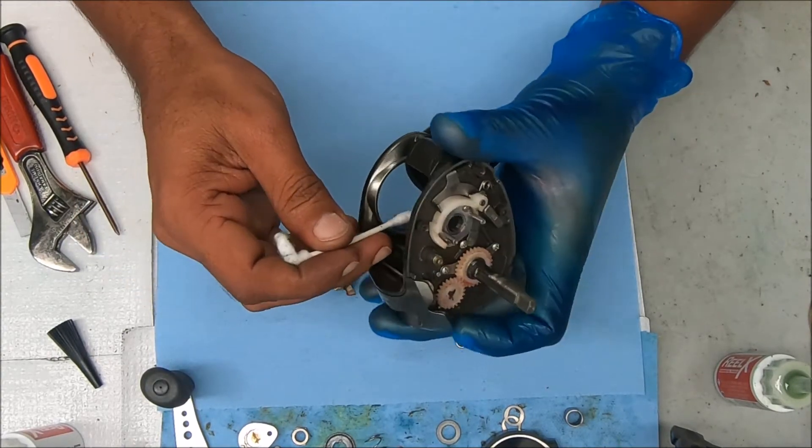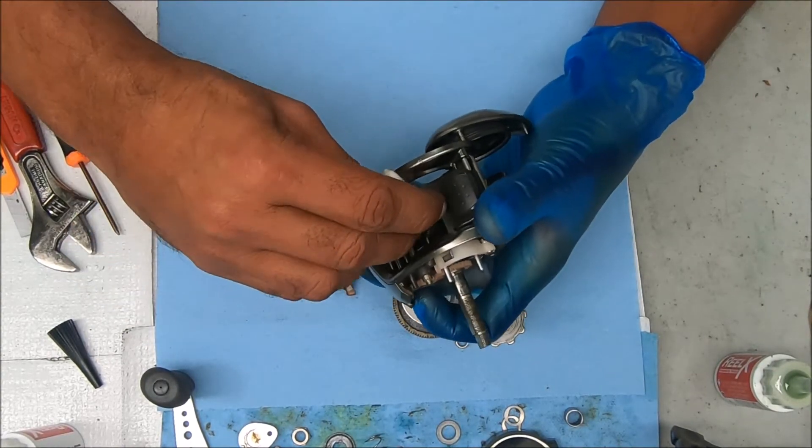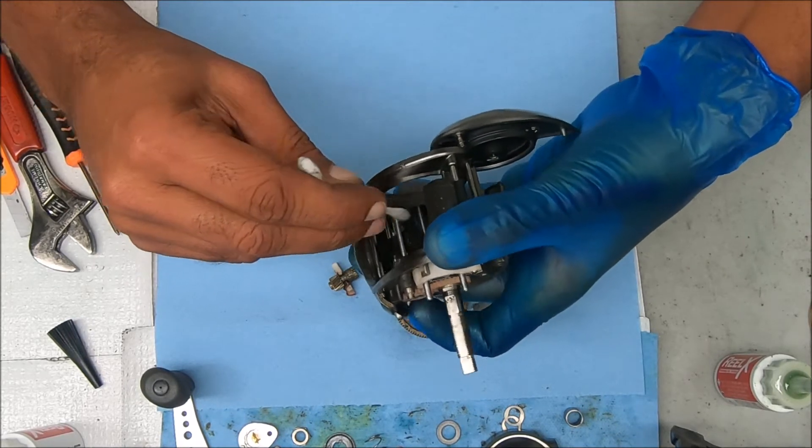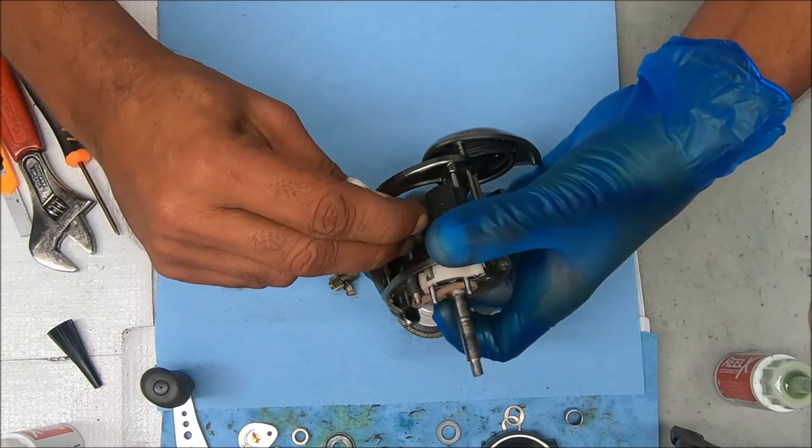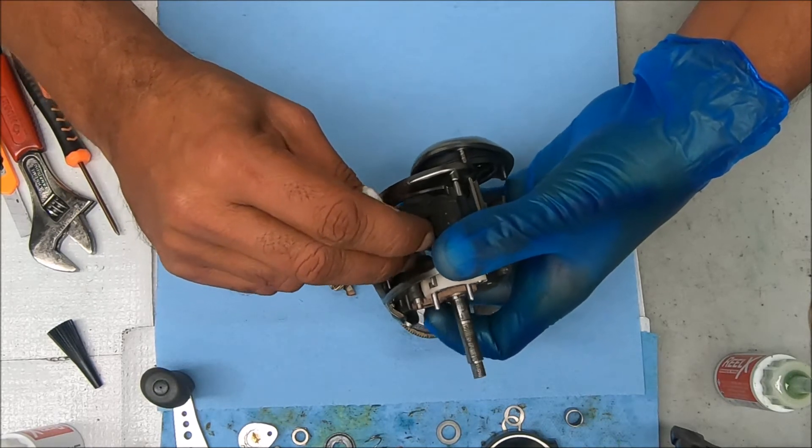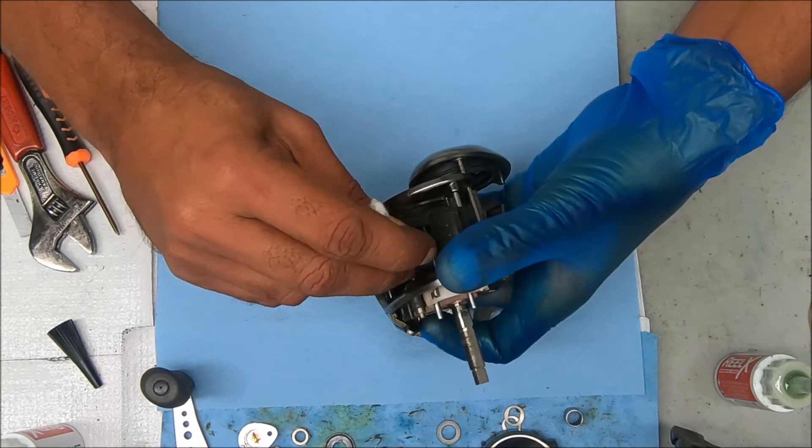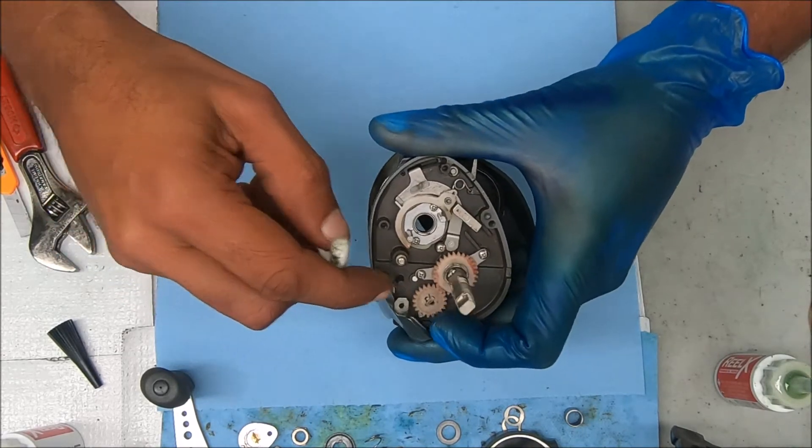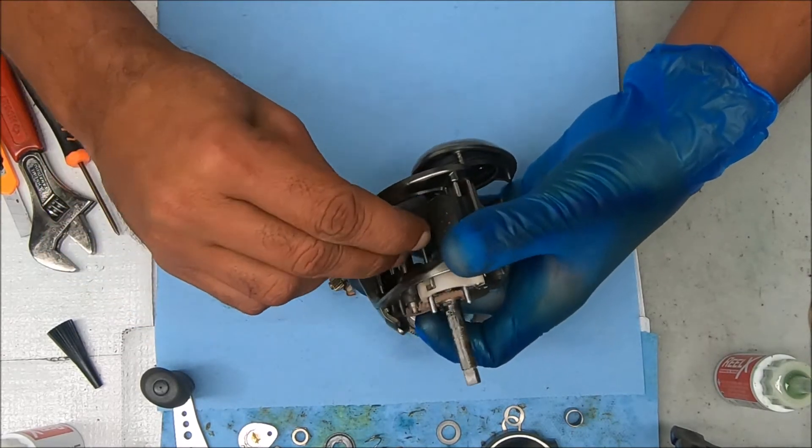Just clean that stuff off. Now I'm just going to take this Q-tip and run it along the top of the worm there. It looks pretty good inside there. I'm rotating the worm with this gear right here so I can get all the surface.